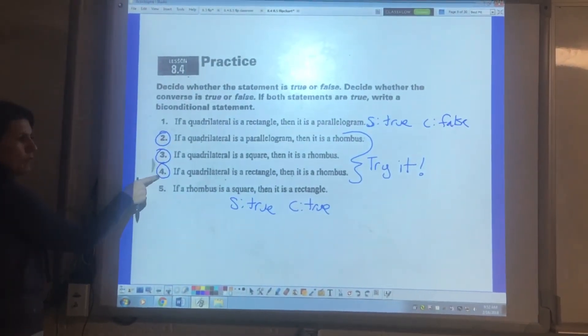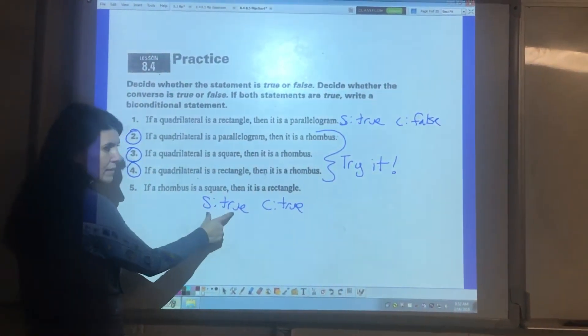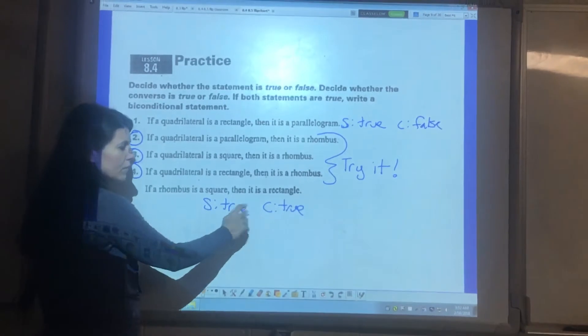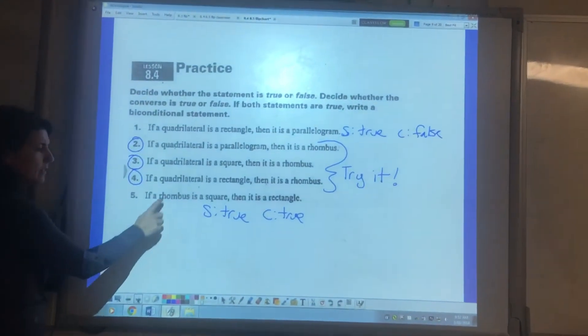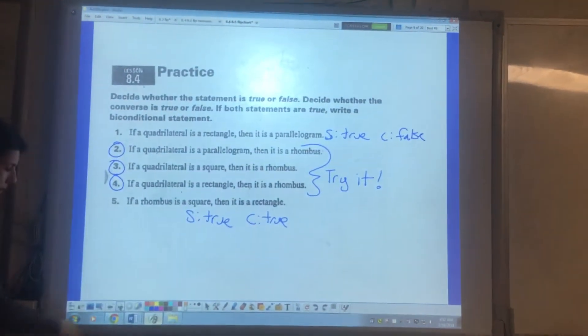Try two, three, and four. Five, the statement if the rhombus is a square then it's a rectangle. That statement is true. The converse is also true because the converse is if the rhombus is a rectangle then it is a square. That's also a true statement.